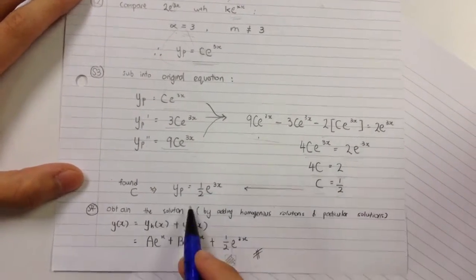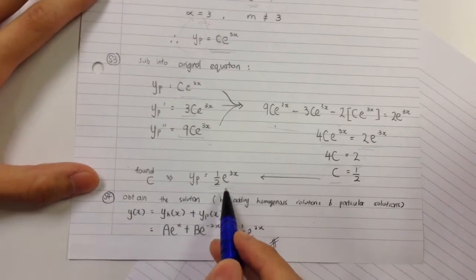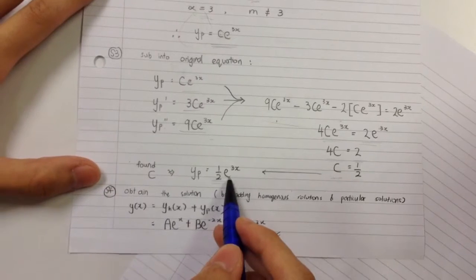Then I substitute into Yp again, so I find Yp equals 1/2 e^(3x).